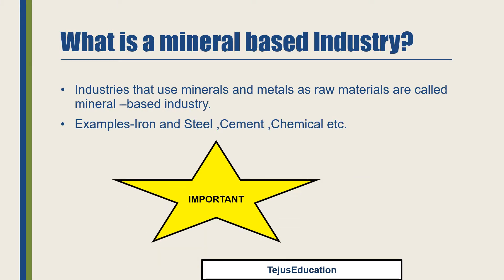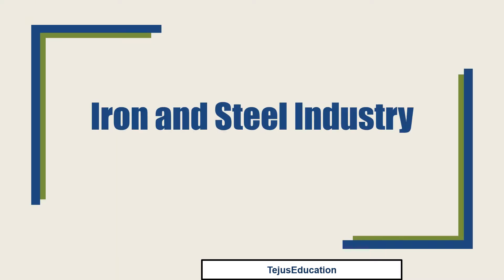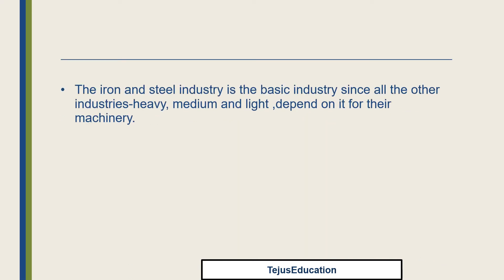What is a mineral-based industry? A very important question: industries that use minerals and metals as raw materials are called mineral-based industries. Examples: iron and steel, cement, chemical, etc. Let's go into detail on the iron and steel industry.